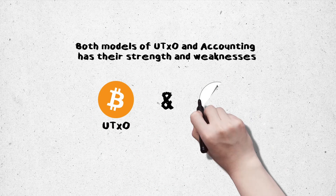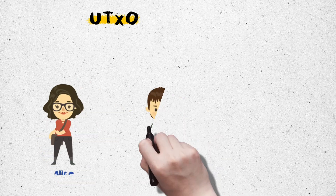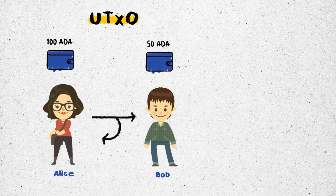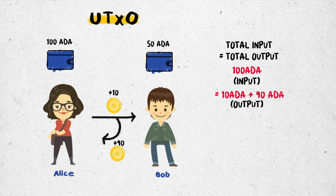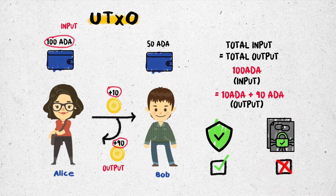But the UTXO and accounting models both have their strengths and weaknesses. In the UTXO model, the total input equals the total output — with outputs of 90 ADA and 10 ADA being the result of a 100 ADA transaction, also serving as the following input for the unused transaction — and is pretty secure. But with UTXO, basically, we cannot deploy smart contracts.